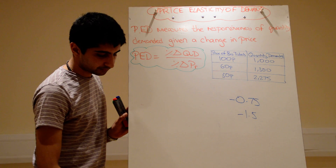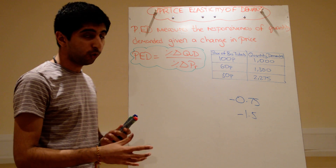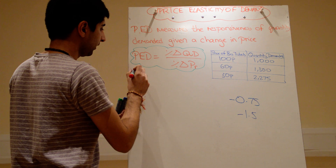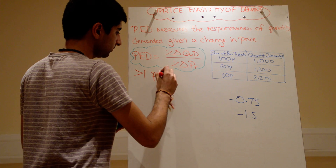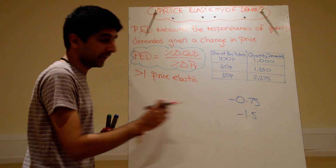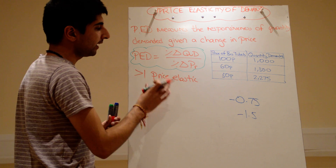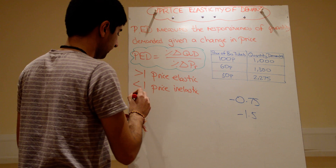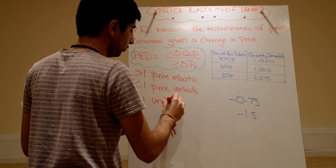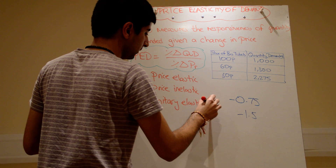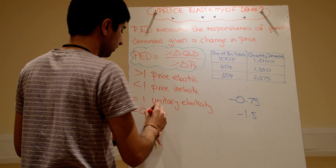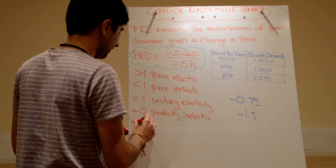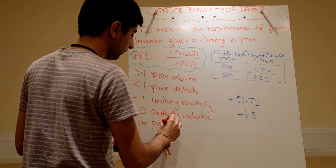How can we actually interpret these figures? We know the signs are always going to be negative, so we just ignore the sign. If your figure, ignoring the sign, is greater than 1, we say demand is price elastic. If your figure is less than 1, demand is price inelastic. If it's equal to 1, we say demand is unit elastic. If your PED figure was 0, we'd say demand is perfectly inelastic, and if your figure was infinity, demand would be perfectly elastic. These are just the range of values you can have.